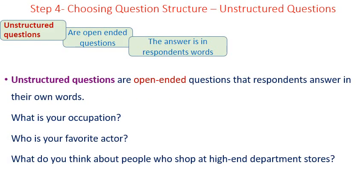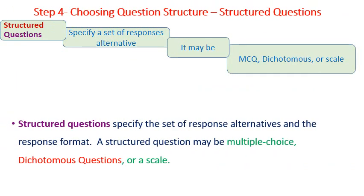Step number four: choosing question structure. We start with unstructured questions. They are open-ended questions and the answer will be in the respondent's own words. Examples: 'What is your occupation?' 'Who is your favorite actor?' 'Which one is your favorite brand name?' Number two, structured questions specify a set of response alternatives. They may be multiple choice (MCQ), dichotomous, or scale.